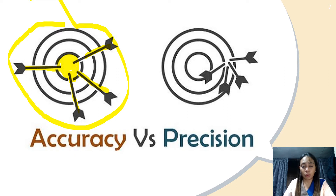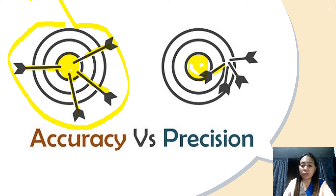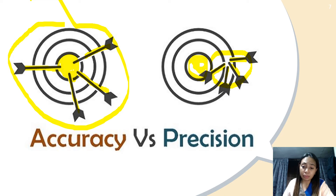When do we say that a reading or measurement is precise? In precision, we don't actually check if the reading has hit the target area. So if this is our target area, and all four arrows have hit this part here — which is far from your target value — we say that our readings are not accurate, but they are precise. So precision is the closeness of the readings to each other. Even if they are not near the true value, if all four readings are close to each other, then we say that our measurement is precise.